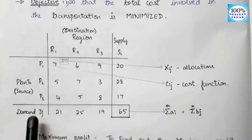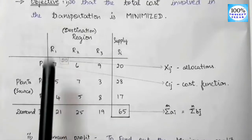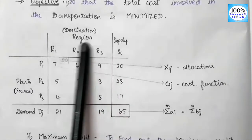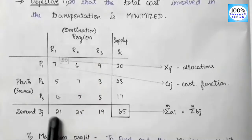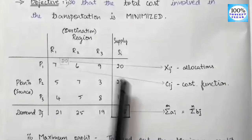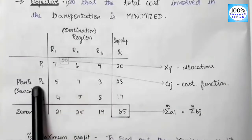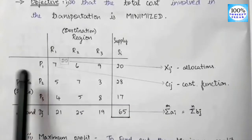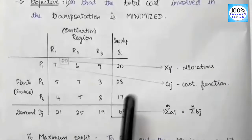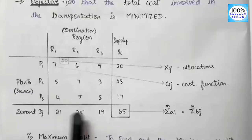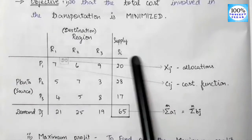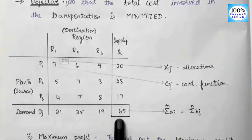Here is the demand. R1 is 21, R2 is 25, R3 is 19 — those are the customers' demand values. For supply: P1 is 20, P2 is 28, P3 is 17 — those are the manufacturing units' supply. The total demand is 21 plus 25 plus 19, which equals 65. The total supply is 20 plus 28 plus 17, which also equals 65.